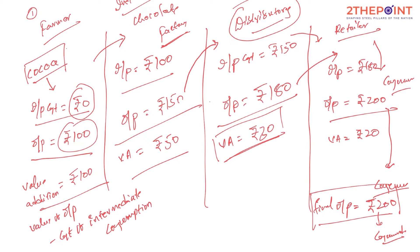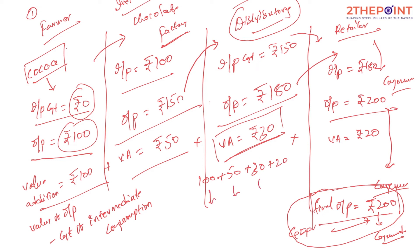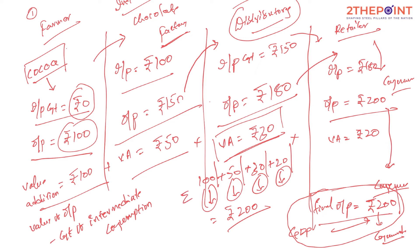So the total GDP in this example is 200 rupees. Using the value addition method, you sum up each stage: 100 + 50 + 30 + 20 = 200 rupees. The worth of output of an economy can be computed by summing up the value addition at each stage, or simply taking the final price of goods and services. Both methods give the same number.